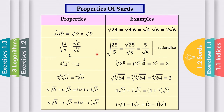The second property is: if you have surd A over B, this equals surd A over surd B. For example, surd 25 over 5 can be written as surd 25 over surd 5, which equals 5 over surd 5. Whenever you see a surd in the denominator, we need to rationalize — that means we want to eliminate the surd in the denominator. We will learn rationalization in the next part.